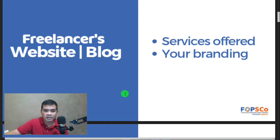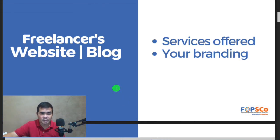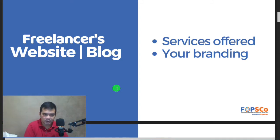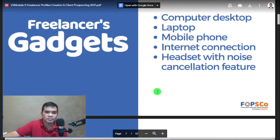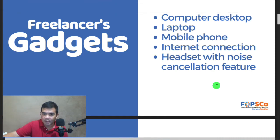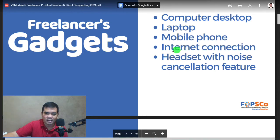A freelancer's website and blog — later on, if you could establish your own website and blog, that will be a nice addition to your toolkit as a freelancer. You can showcase your services offered. For gadgets, of course, you need your computer, desktop, or laptop. Your mobile phone will be used for monitoring even when you're away from your desk. Internet connection is very important — that is something you cannot go without. Also, a headset with noise cancellation feature.